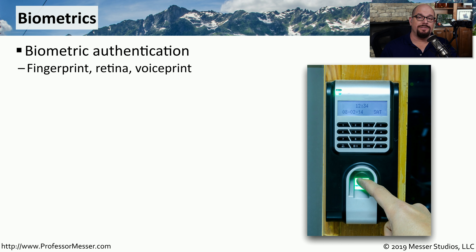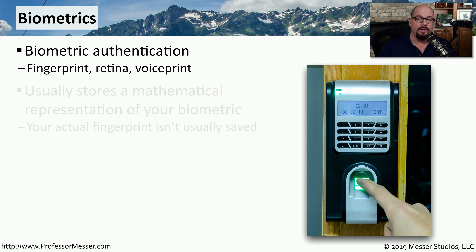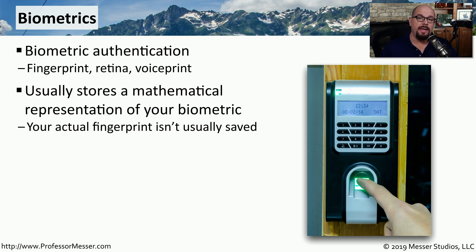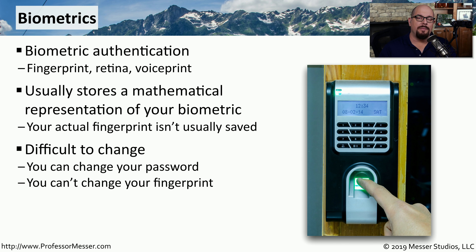Biometric authentication is validating a part of you — this might be your voice print, fingerprint, or some other physical representation of who you are. The biometric system may store a mathematical representation of your fingerprint, not a picture, using an algorithm to determine how your fingerprint is designed and compare other fingerprints using that same algorithm. Although we commonly change passwords, it's very difficult to change something biometrically — you're not going to change a retina scan or fingerprint scan easily, so this type of authentication will always be connected with a certain person.